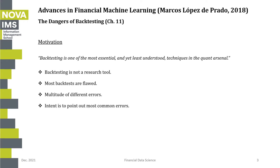On the motivation for this chapter, the author points out that backtesting is one of the most essential and yet least understood techniques in the quant arsenal. The intent of this chapter is to show that most backtesting is flawed — flawed because it incurs a multitude of different errors made by both beginners and experts in their fields.